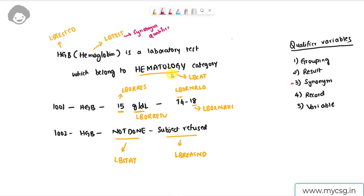Now looking at LBCAT — there can be multiple different types of hematology tests, such as WBC count, RBC count, and others, with HGB being one of them. LBTEST is part of an upper-level grouping which is a category. So we have a qualifier type called grouping qualifier, and LBCAT is an example of a grouping qualifier.